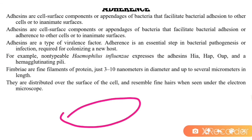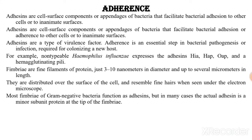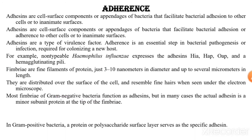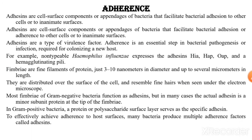Most fimbriae are found in gram-negative bacteria and function as adhesins, but in many cases the actual adhesin is a minor subunit protein at the tip of the fimbria. In gram-positive bacteria, a protein or polysaccharide surface layer serves as a specific adhesin. To effectively achieve adherence to host surfaces, many bacteria produce multiple adherence factors called adhesins. These adhesins are cell surface components or appendages present on the bacterial cell surface that help attach to the host cell and provide virulence factors to the bacteria.